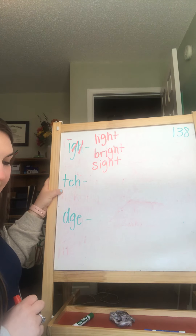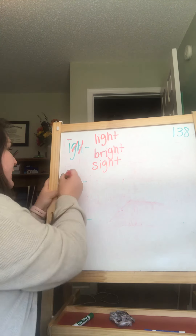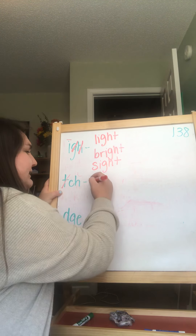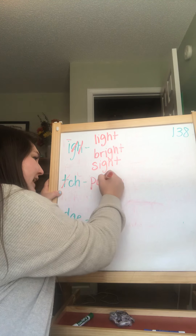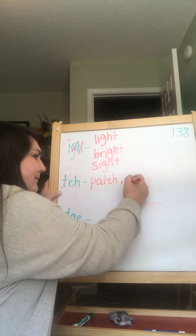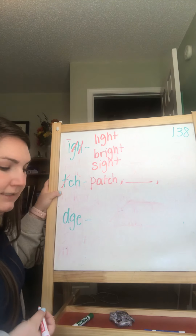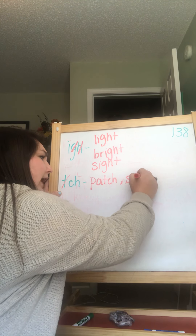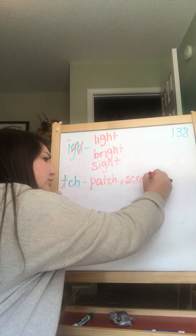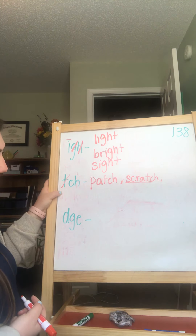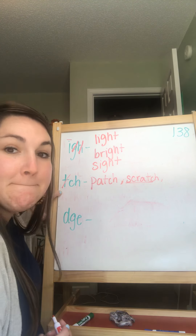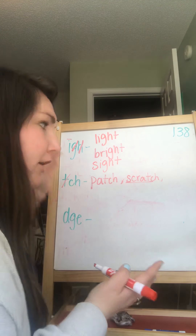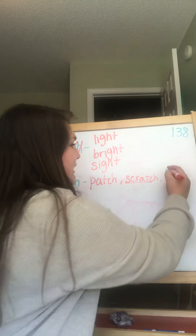Triagraph T-C-H says ch. The T is silent here. So we know T-C-H says ch, like patch. T-C-H can also say scratch. Or, when we're playing a game and we want them to look the same, or find the same — match.